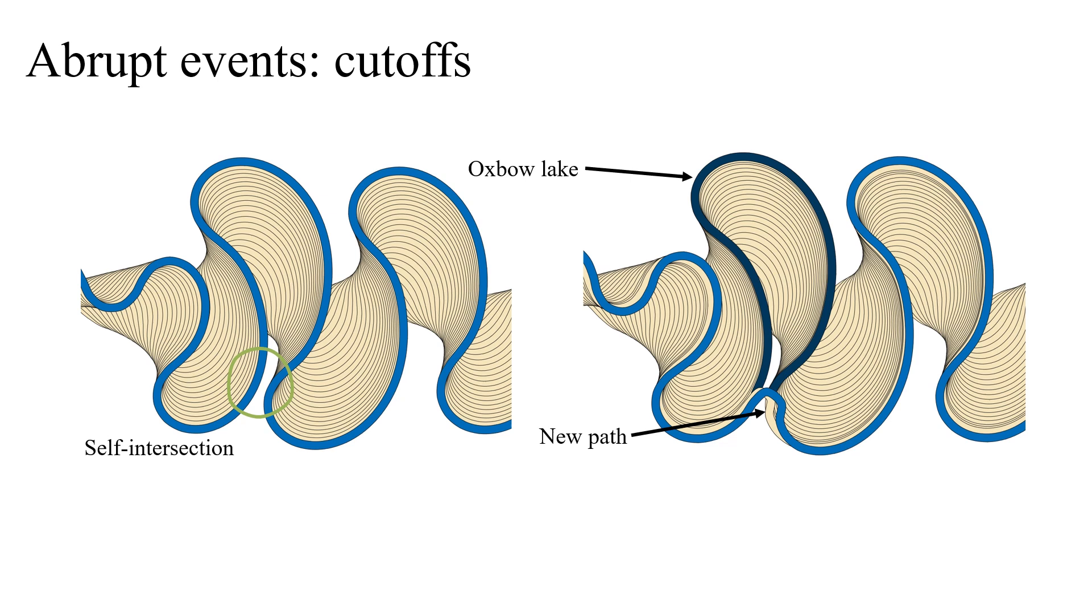After channel migration, we simulate abrupt events, such as cutoffs. Cutoffs occur when a channel starts to intersect itself due to high local curvature. The channel abandons its current trajectory, which becomes an oxbow lake, and continues onto the shorter path. We record the location of oxbow lakes during the simulation and use this information to compute procedural vegetation density and sediment cover.